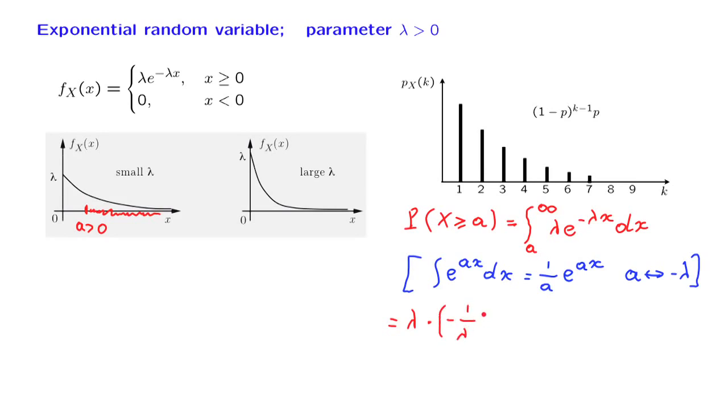So we get minus 1 over lambda. And then the same exponential function, e to the minus lambda x. And because the range of the integration is from a to infinity, we need to evaluate the integral at a and infinity, and take the difference. Now, this lambda cancels that lambda. We're left with a minus sign, and from the upper limit, we get e to the minus lambda times infinity. And then, from the second term, we have a minus sign that cancels with that minus sign, and gives us a plus term, plus e to the minus lambda a.